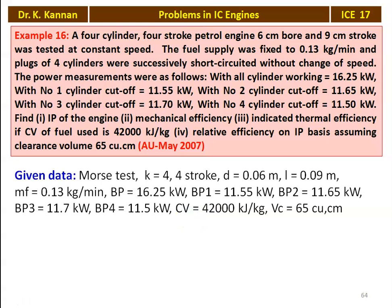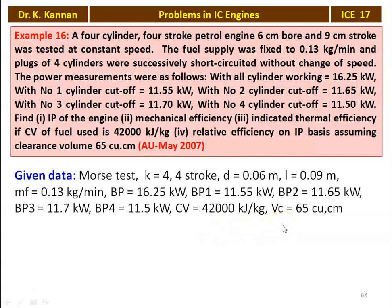This is a Morse test. The Morse test is conducted for calculating the indicated power of the individual cylinders of a multi-cylinder engine, and is used to calculate the friction power. The given data: number of cylinders K equal to 4, it is a 4-stroke cycle engine, diameter equal to 0.06 meter, stroke length equal to 0.09 meter, mass of the fuel 0.13 kilograms per minute. Brake power with all cylinders working 16.25 kilowatts; BP1 with cylinder 1 cutoff 11.55 kilowatts; BP2 11.65 kilowatts; BP3 11.7 kilowatts; BP4 11.5 kilowatts. Calorific value 42,000 kilojoules per kilogram and clearance volume V_C equal to 65 cubic centimeter.